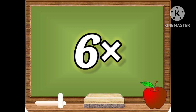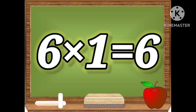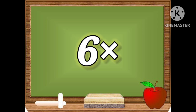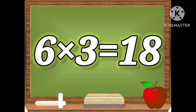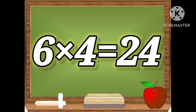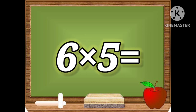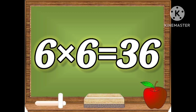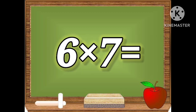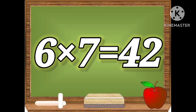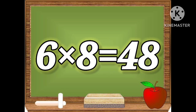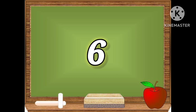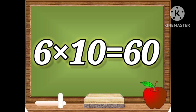Five tens are fifty. Six ones are six, six twos are twelve, six threes are eighteen, six fours are twenty-four, six fives are thirty, six sixes are thirty-six, six sevens are forty-two, six eights are forty-eight, six nines are fifty-four, six tens are sixty.